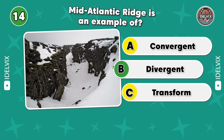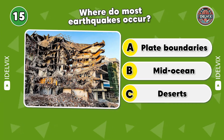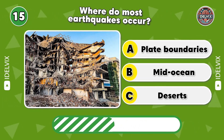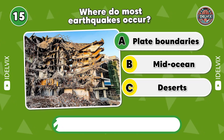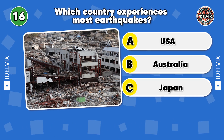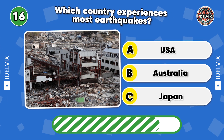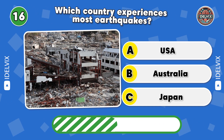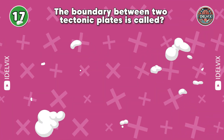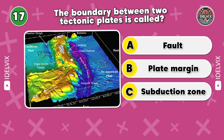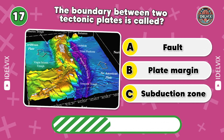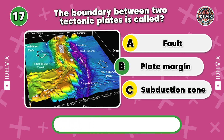14. The Mid-Atlantic Ridge is an example of... Answer: Divergent. 15. Where do most earthquakes occur? Answer: Plate boundaries. 16. Which country experiences the most earthquakes? Answer: Japan. 17. The boundary between two tectonic plates is called... Answer: Plate margin.